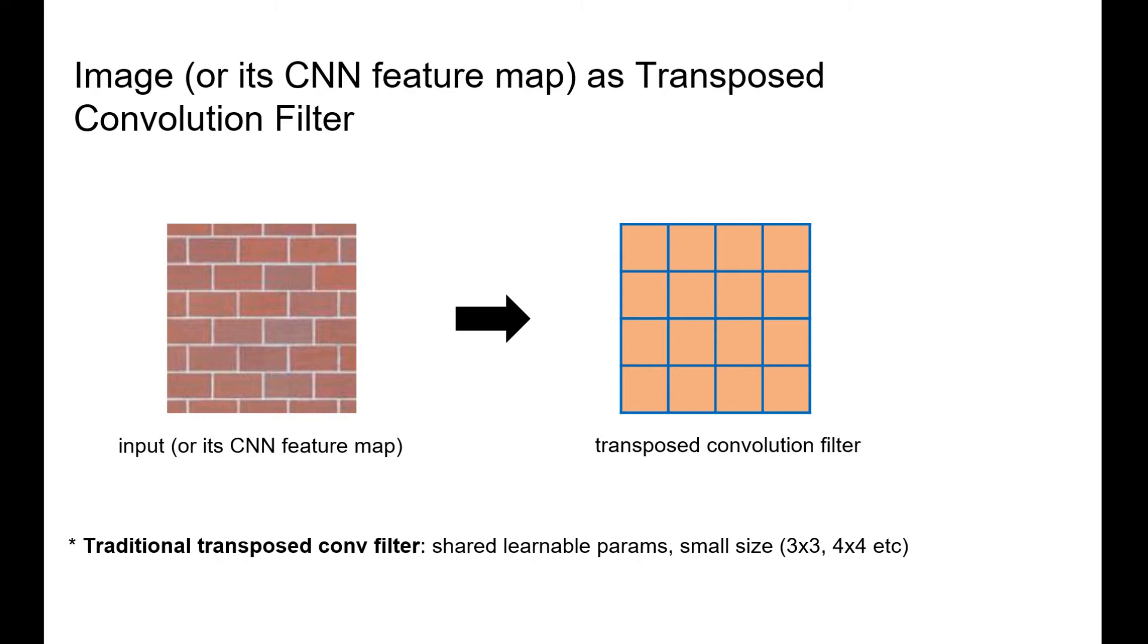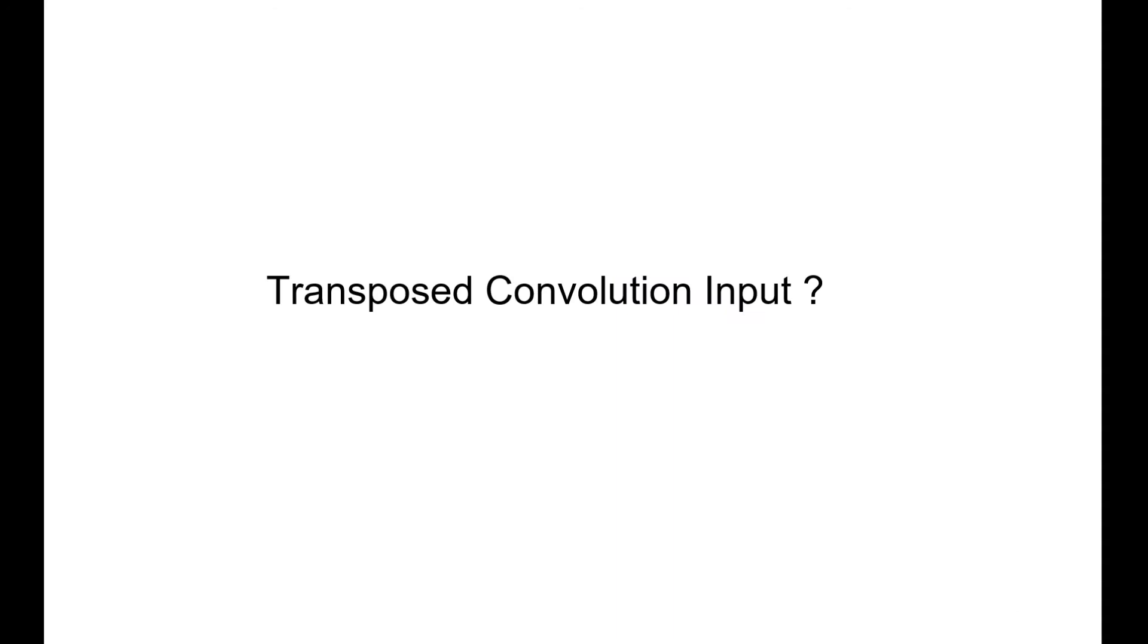That is to say, the traditional filters are learnable parameters with small size, like 3x3 or 4x4, and the filters are shared across all the input textures. However, in our case, the transposed convolution filters are not learnable parameters, but dynamically determined by each input texture.